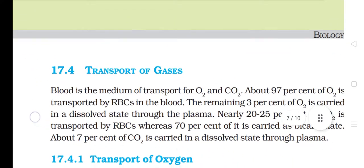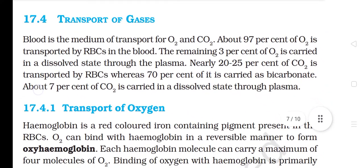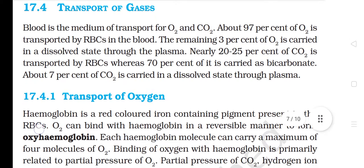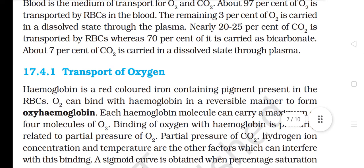17.4 Transport of Gases. Blood is the medium of transport for O2 and CO2. About 97% of O2 is transported by RBCs in the blood. The remaining 3% of O2 is carried in a dissolved state through the plasma. Nearly 20-25% of CO2 is transported by RBCs whereas 70% of it is carried as bicarbonate. About 7% of CO2 is carried in a dissolved state through plasma.